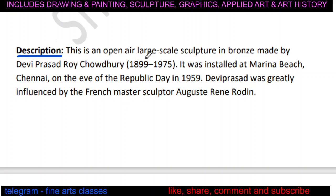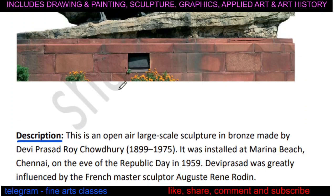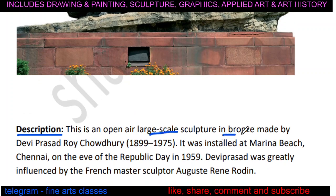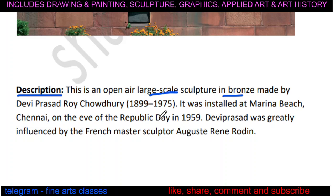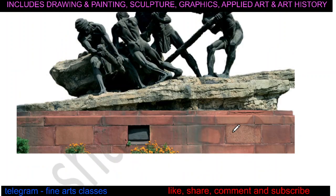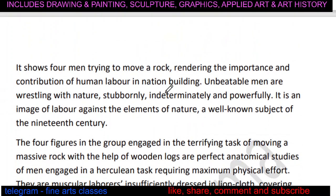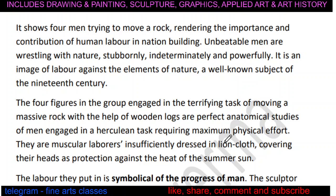Triumph of Labour is an open-air, large-scale sculpture in bronze made by DP Ray Chowdhury. It is installed at Marina Beach, Chennai — so remember this location. DP Ray Chowdhury was greatly influenced by the French master sculptor Auguste Rodin, and the influence of Rodin's artwork is clearly visible in his work.